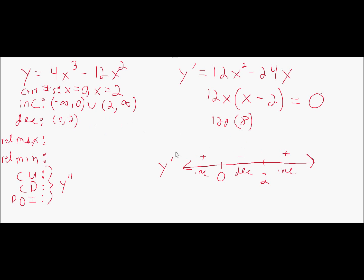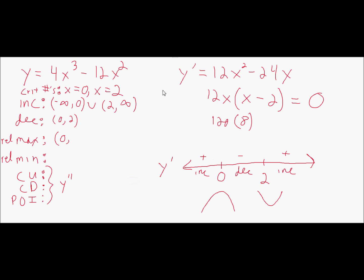Now we use the first derivative test to determine maximums and minimums. At zero, the derivative goes from positive to negative — the function goes from increasing to decreasing — so there's a maximum there. At two, it goes from decreasing to increasing, so there's a minimum. To find the y value at the maximum, plug zero back into the original function — not the derivative — because you want the actual y value, not the slope. Plugging zero in gives zero, so there's a relative maximum at (0, 0).